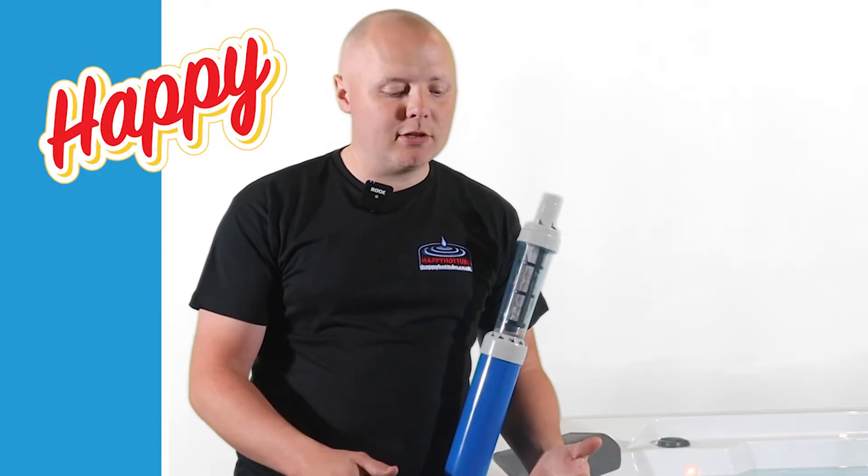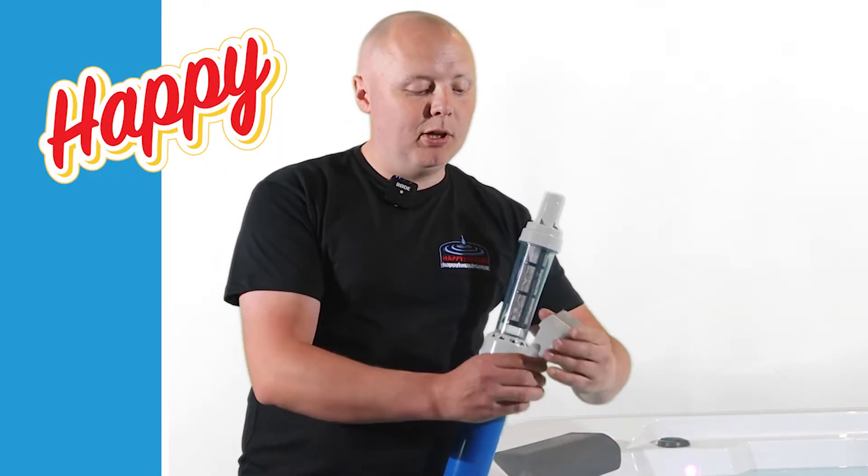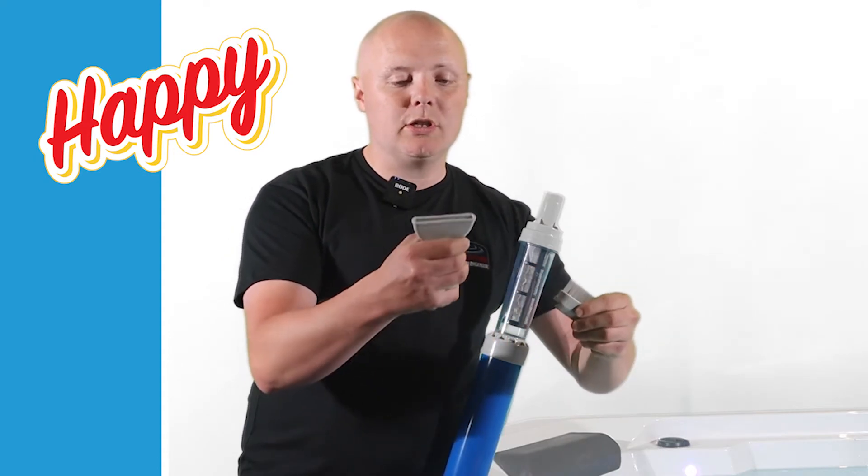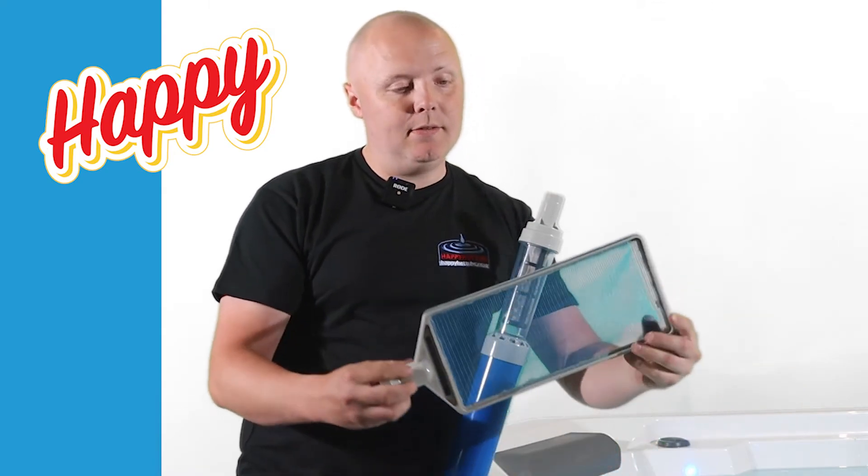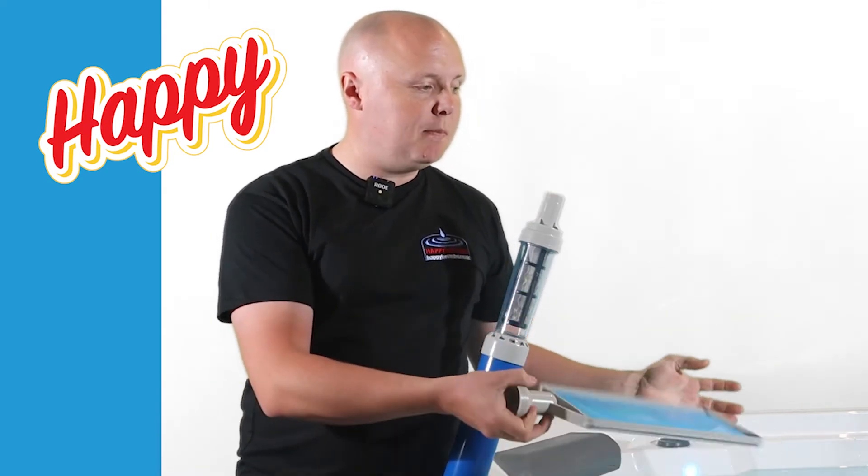The vac comes with various accessories. It comes with a brush head and also a wide nozzle. It also comes with a nice handy net if you need to get any bits off the surface.